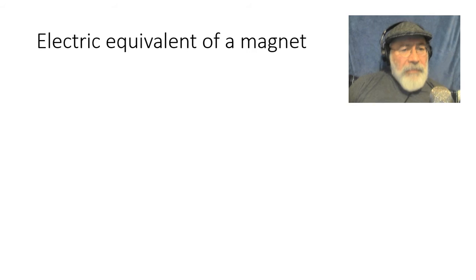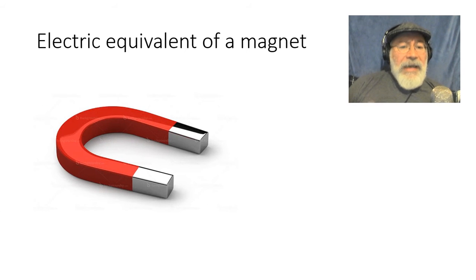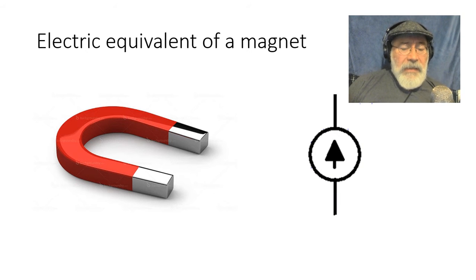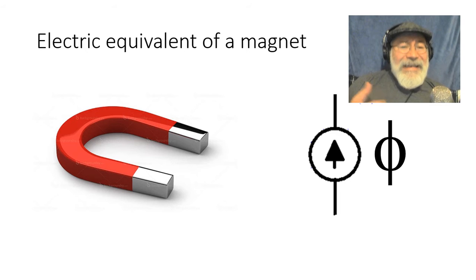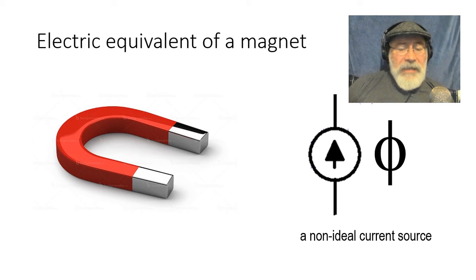What about a magnet? Well, a magnet in its equivalent electric circuit behaves as a current source, a current source that delivers flux. So it is a flux source. But not an ideal one? No. A non-ideal current source. That is the electric circuit equivalent of a permanent magnet.